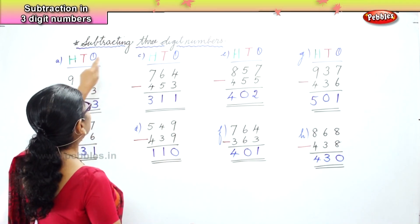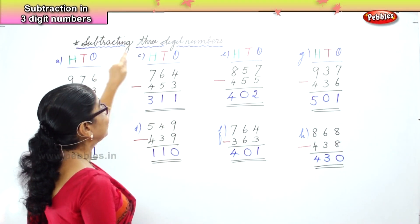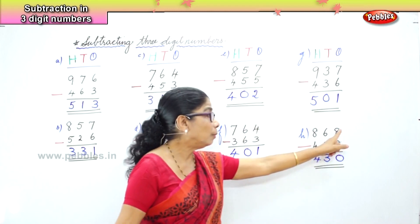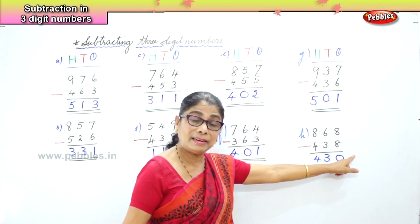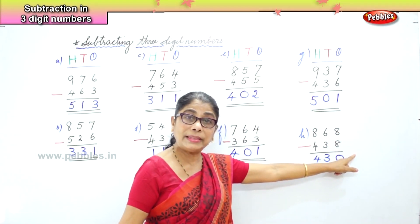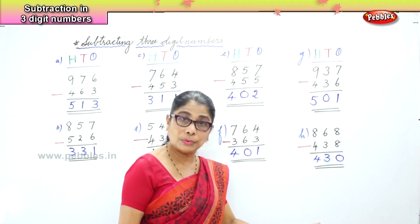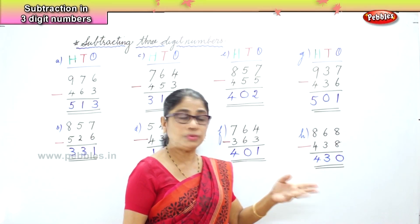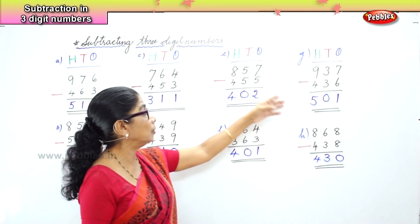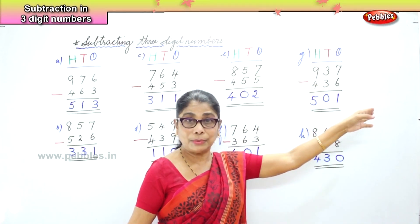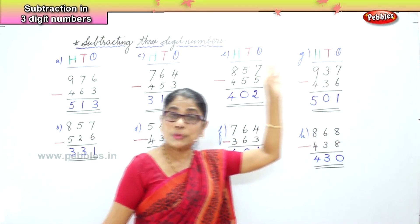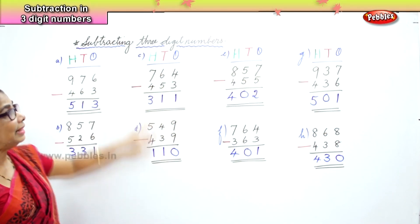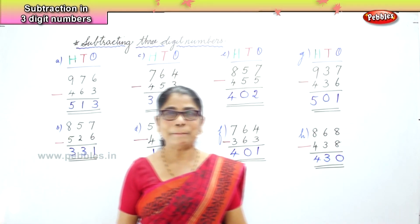So we have learnt today subtracting 3-digit numbers. Remember, when you have the same number take away the same number, you get 0 — any number: 2 take away 2 is 0, 8 take away 8 is 0, 3 take away 3 is 0. So we learnt how to subtract 3-digit numbers.